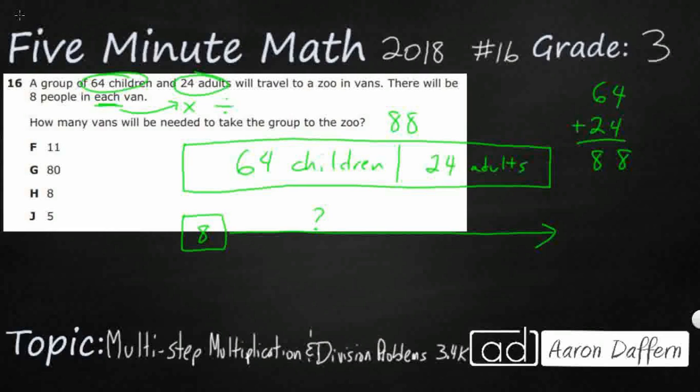And if we didn't see that word each in there, when you have equal groups, so we have eight in each van, that's an equal group of eight. And we're going to say that equal groups is also another clue that we're looking at multiplication or division.